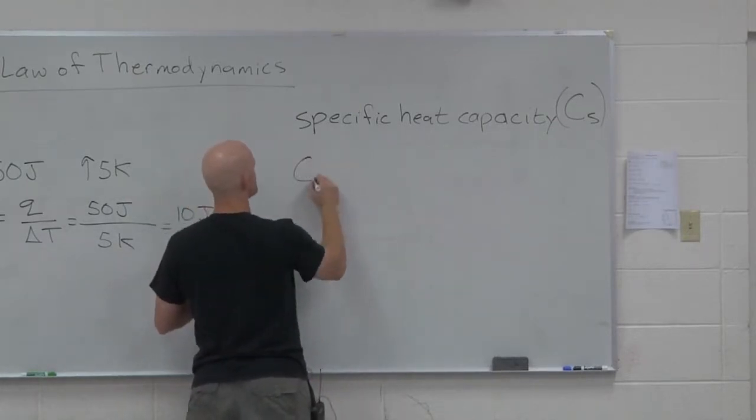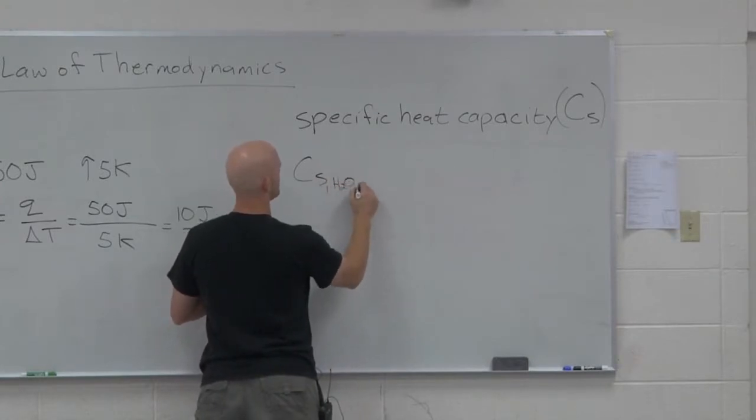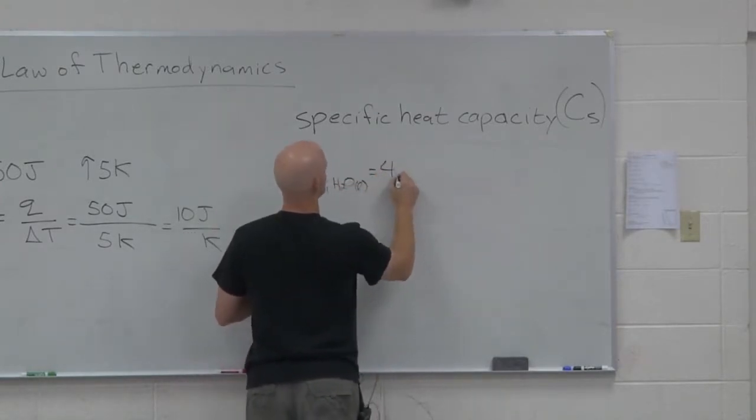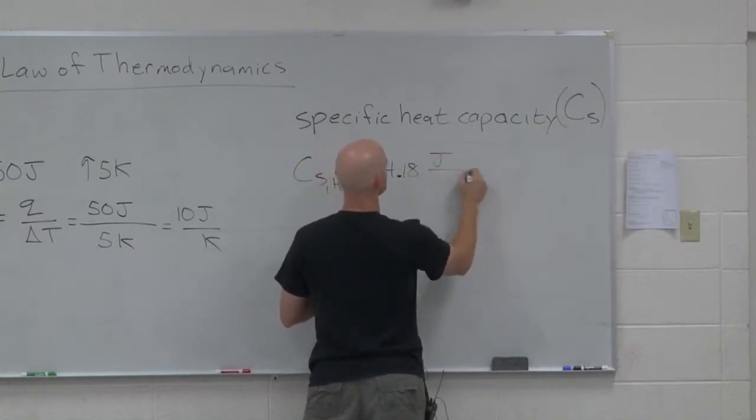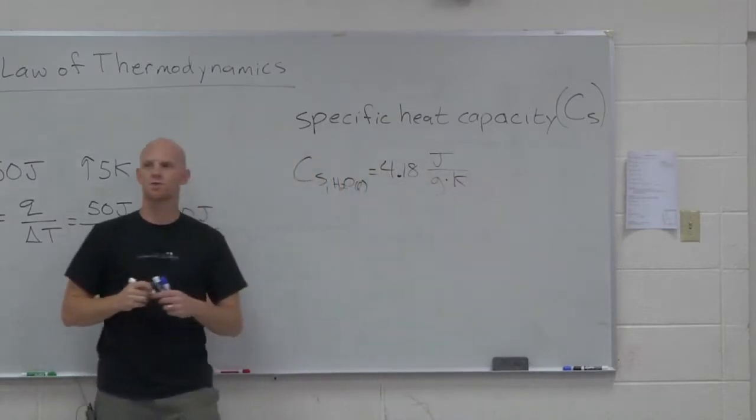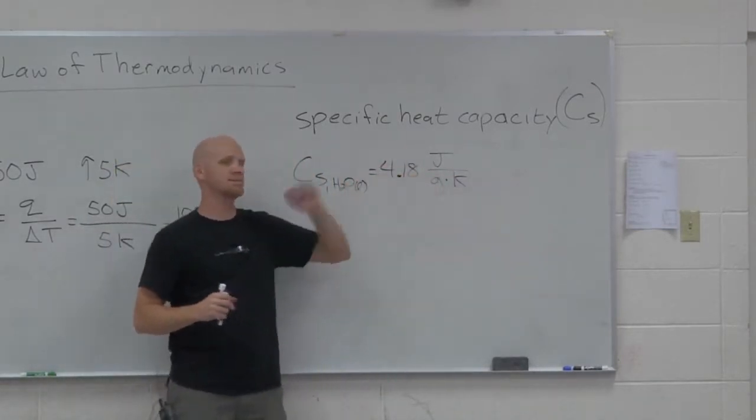Well, we define the specific heat in a slightly different way. And so in this case, your specific heat, let's say of water, liquid water, is 4.18, round it a little bit, joules per gram kelvin. So joules per gram kelvin, you might think of this as joules per gram per kelvin.